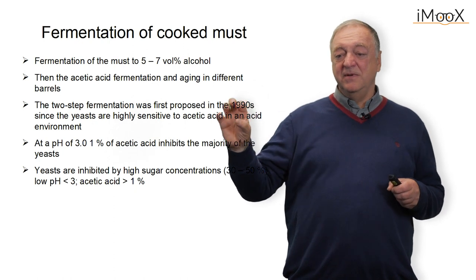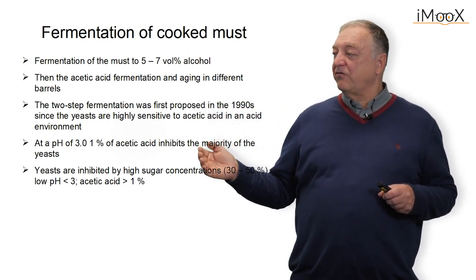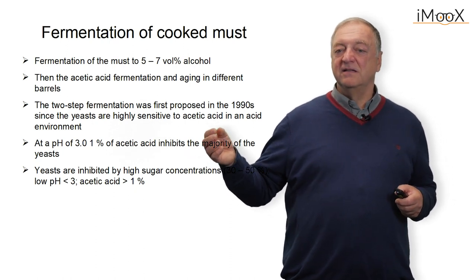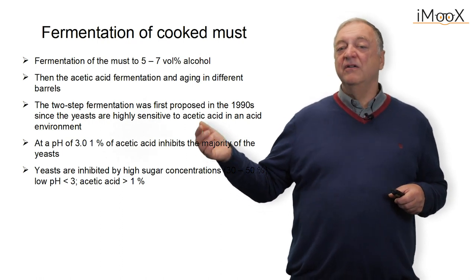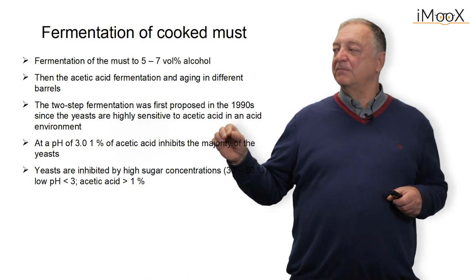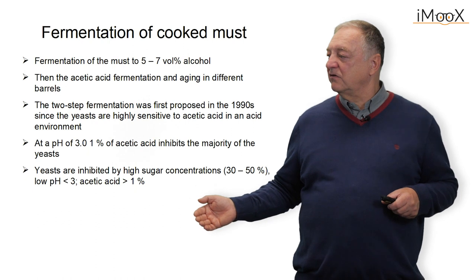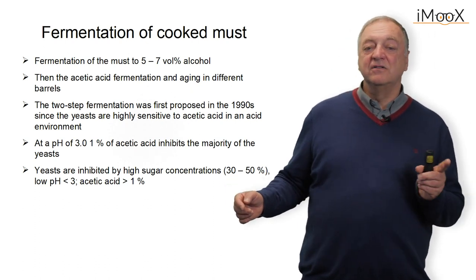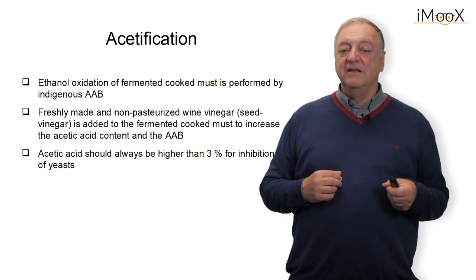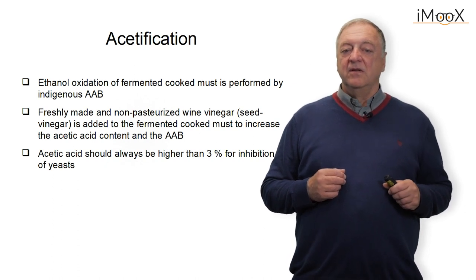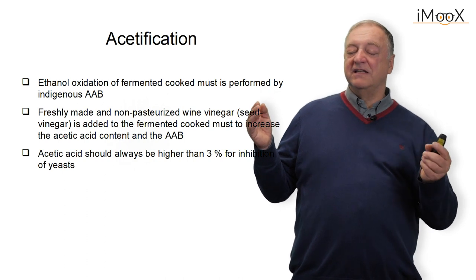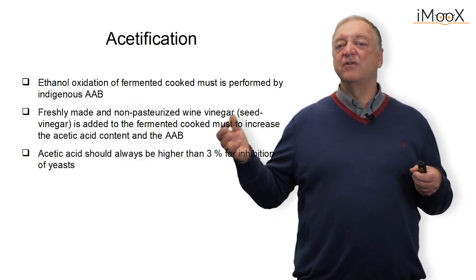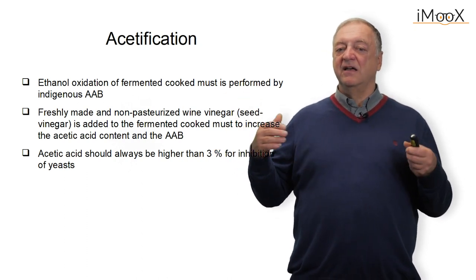This has to be a two-step process because at pH 3 — meaning when one percent of acetic acid is present in the liquid — the yeast is completely inhibited. So if we want further alcohol production, it must be done under anaerobic conditions where no acetic acid bacteria are present. High concentrations of sugar can also inhibit the growth of yeast, and an acetic acid concentration above one percent similarly inhibits yeast. The oxidation of the alcohol is normally done in the presence of indigenous acetic acid bacteria, but they can also be transferred from older fermentations to the new fermentation as a high-concentration inoculum.